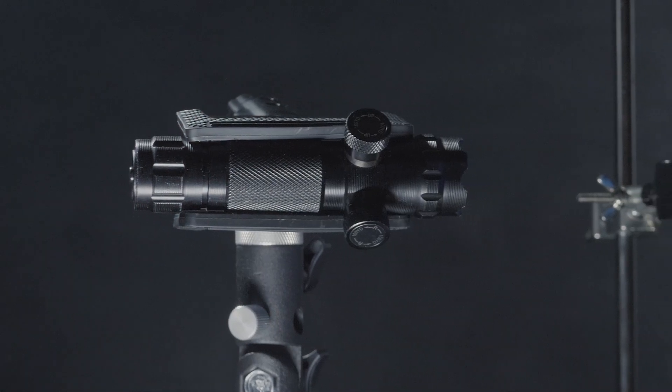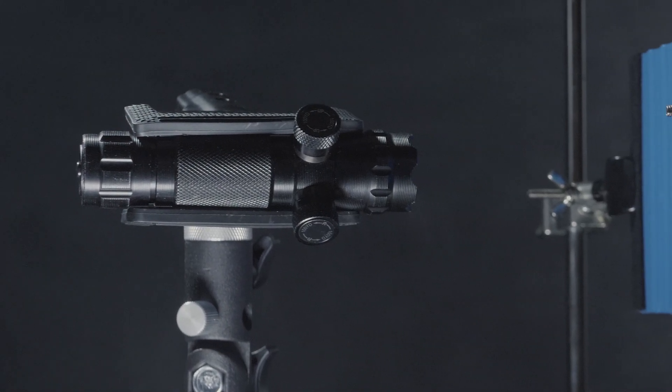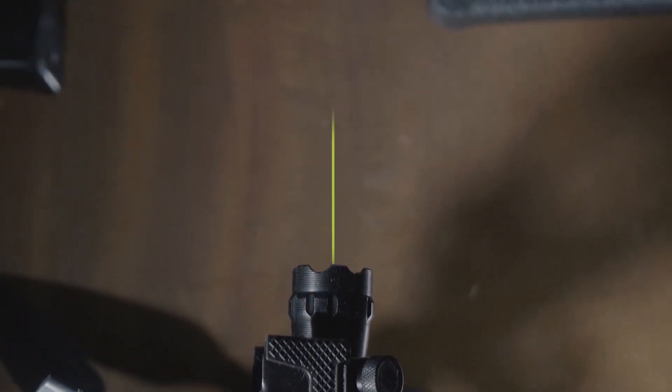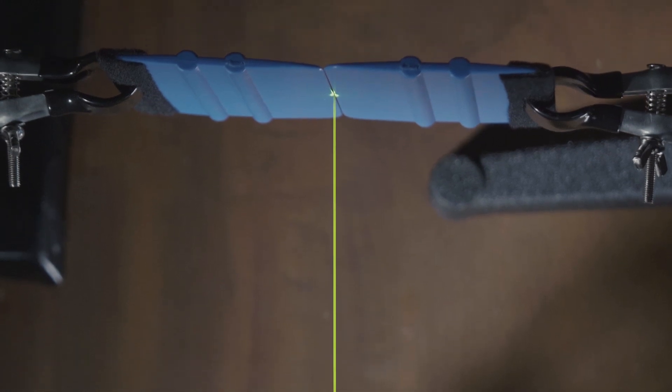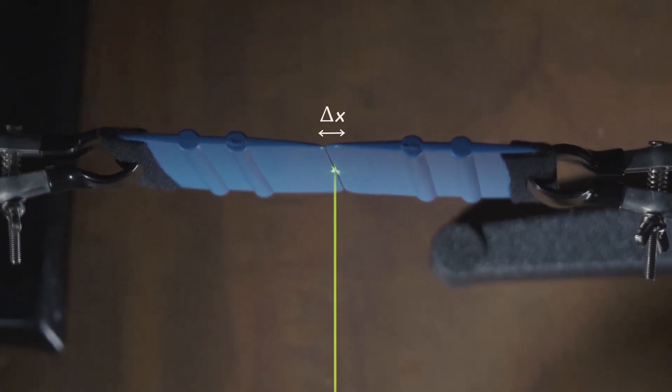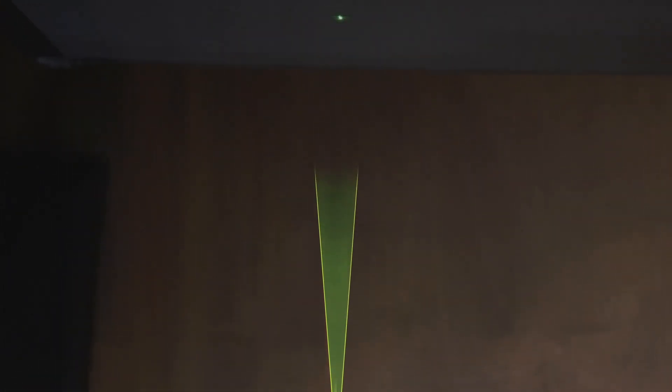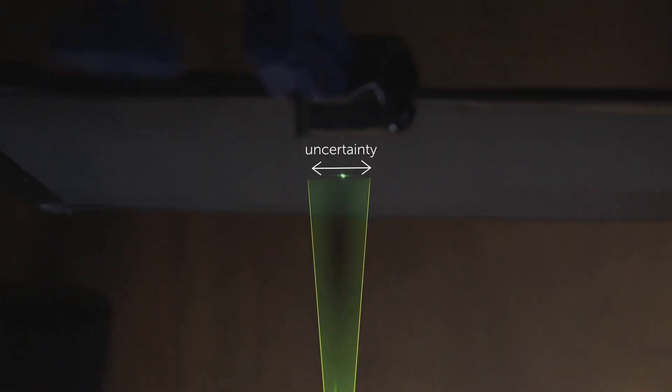This can be explained by the Heisenberg Uncertainty Principle. When we make the size of the slit smaller, we are trying to send the beam of light through a very accurately known position. This, in turn, means there will be an uncertainty in measuring the momentum of the light packet. That uncertainty manifests itself as an angular uncertainty, which falls on the wall and produces this diffraction pattern.